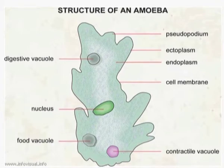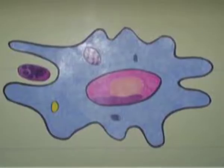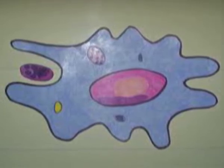Pseudopodia also help Amoeba in capturing prey and forming a food vacuole where food is finally digested and released into the cytoplasm. Excretion is not required because they live in water, but they do have an osmoregulatory mechanism which is carried out by the contractile vacuole.